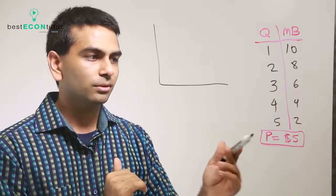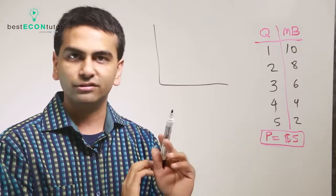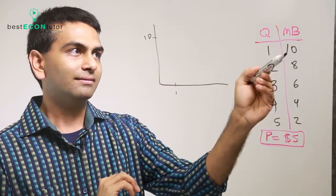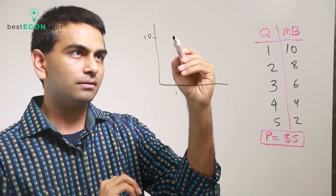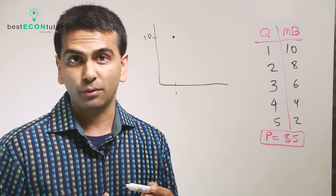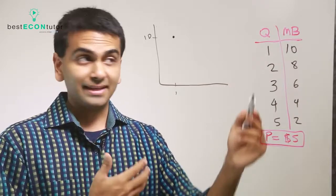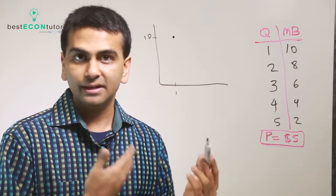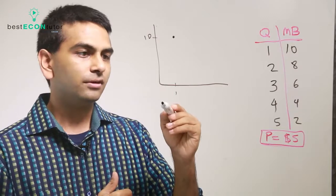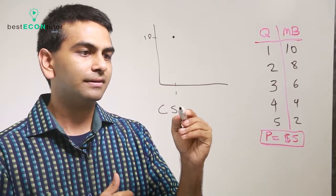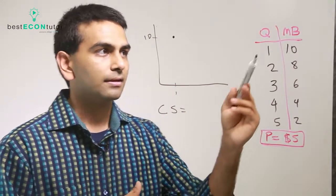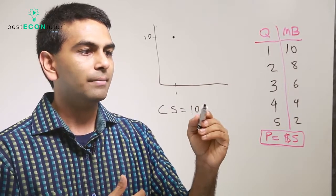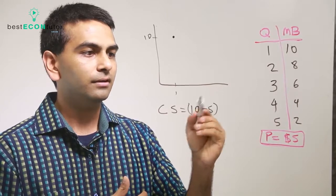Every good always costs the same amount, so in this case the price is $5 for every good. The very first item gave you a $10 benefit but you only had to pay $5. That gap — that difference of $5 extra that you would have paid — is called your consumer surplus. Consumer surplus is the extra amount you would have paid: $10 you're willing to pay minus the $5 you actually paid for that first good.